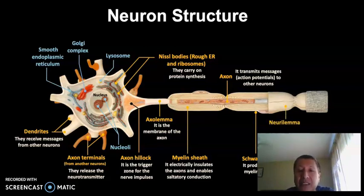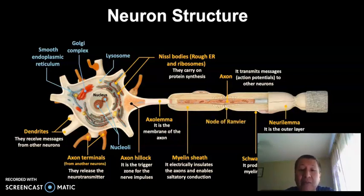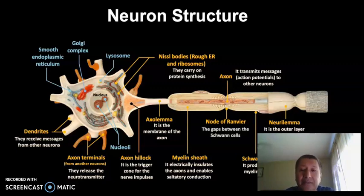The neurilemma is the cell membrane of the Schwann cell. The nodes of Ranvier are the gaps in between the Schwann cells.